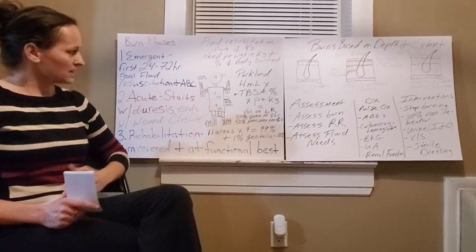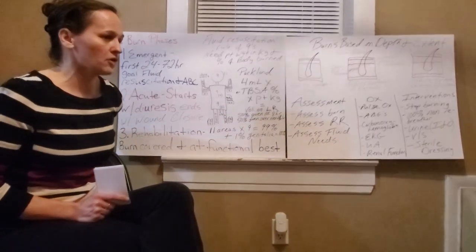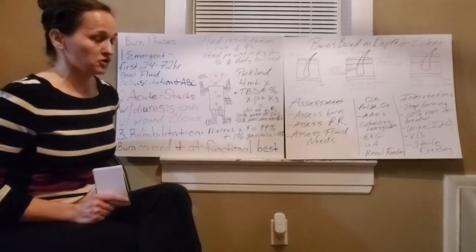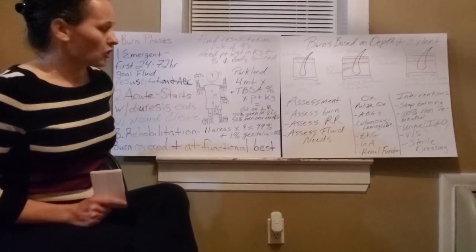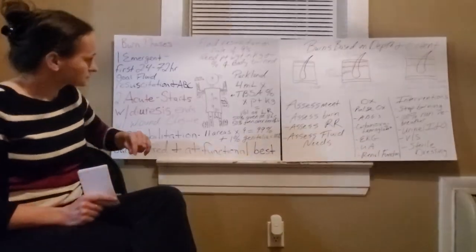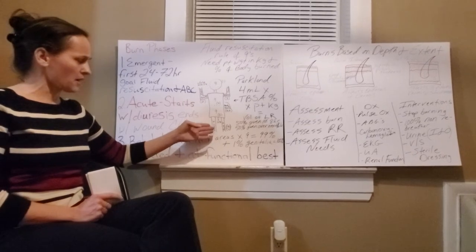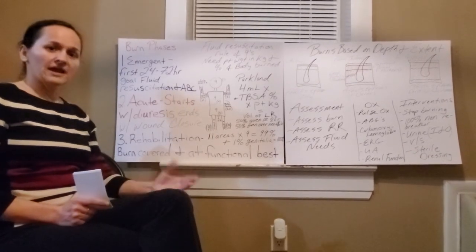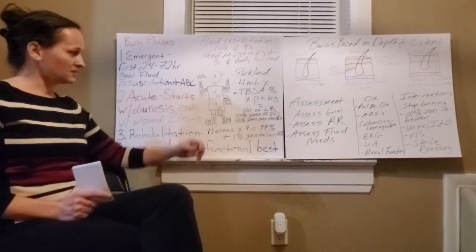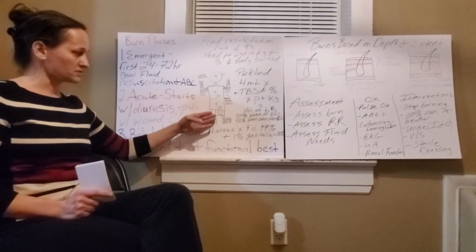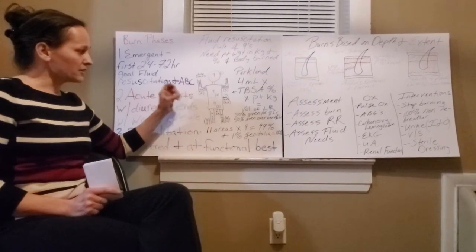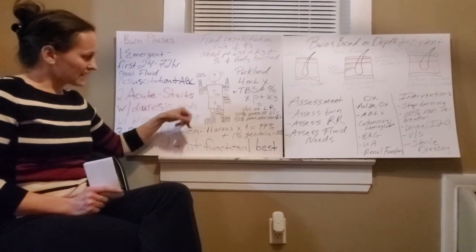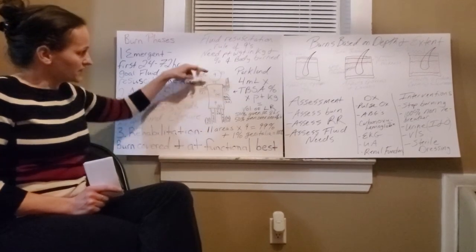The abdomen is nine. And on the back, the upper part of your back is nine, and the lower part of your back is nine. And you also have your legs, because they're bigger than your arms. They're nine in the front, and they're nine in the back. And your privates, if they're burnt, they're 1%. This model here is saying, for all these areas, there's 11 areas of nines.